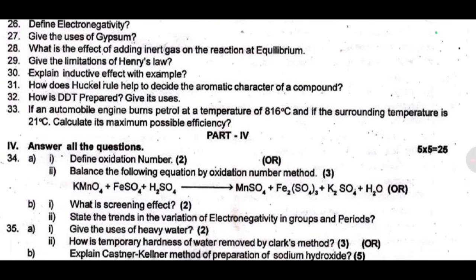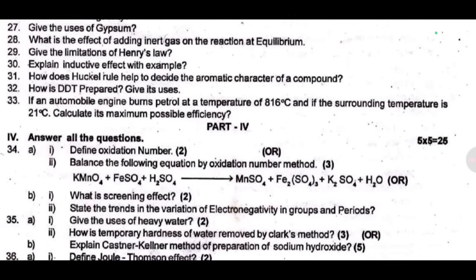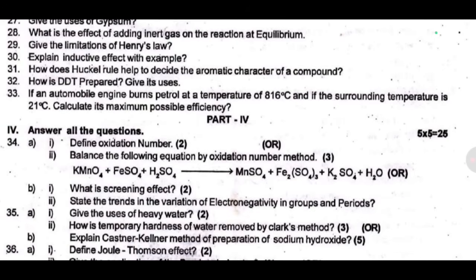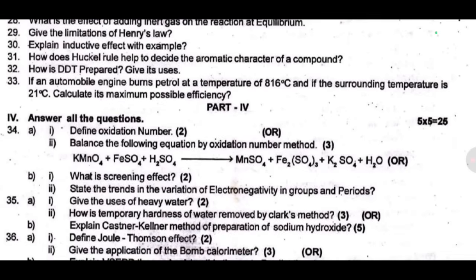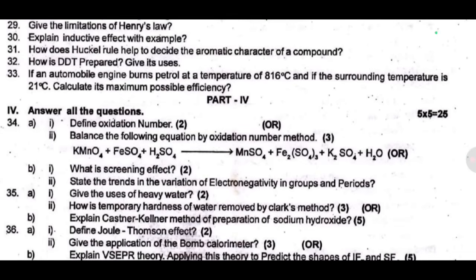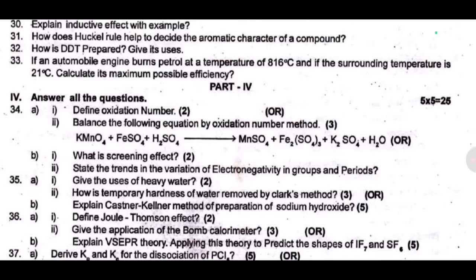Thirty five A — give the uses of heavy water. Next — how is the temporary hardness of water removed by Clark's method? Or, explain the Castner-Kellner method of preparation of sodium hydroxide. Next, thirty six A — define the Joule-Thomson effect. Give the application of the bomb calorimeter.